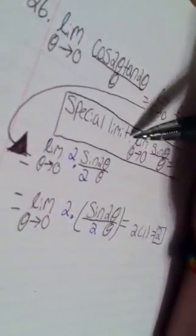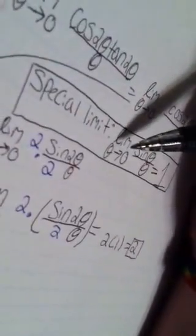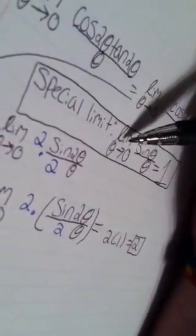And for this we're going to be using our special limit that states that the limit of theta approaches 0 of sine theta over theta equals 1.